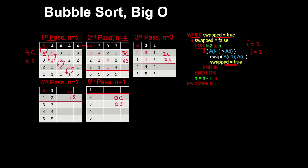Here we looked at the worst case, where the numbers were given in reverse order. Therefore, in the first pass we obtained n-1 comparisons and n-1 swaps. Similarly, in the second pass we get n-2 comparisons and n-2 swaps. And that keeps going on,